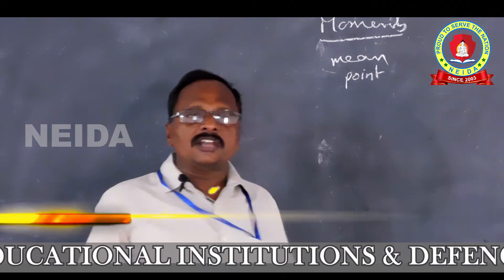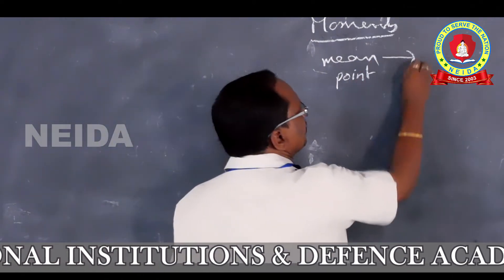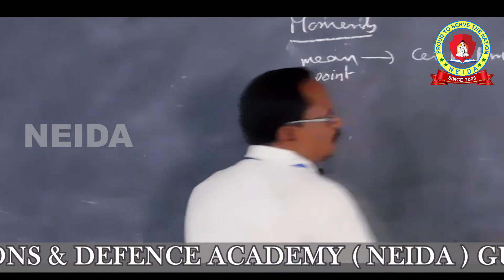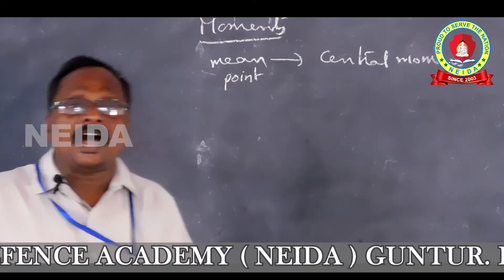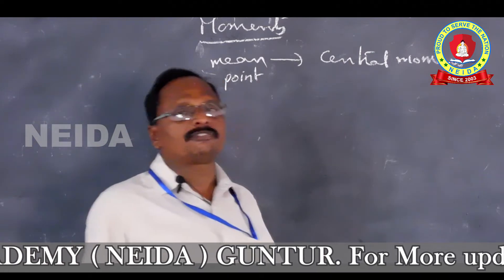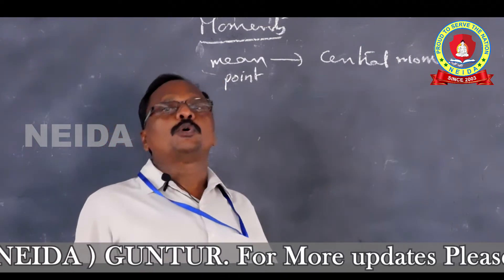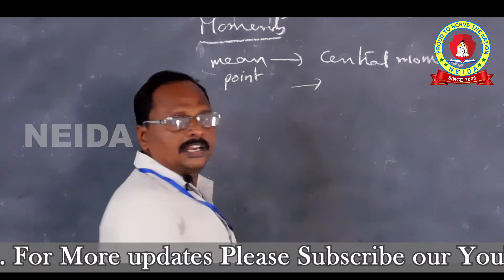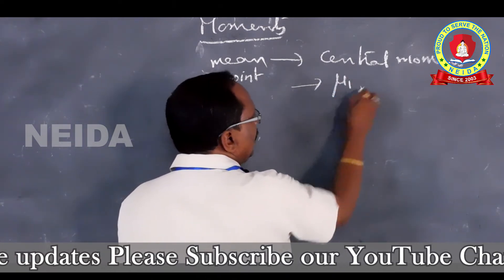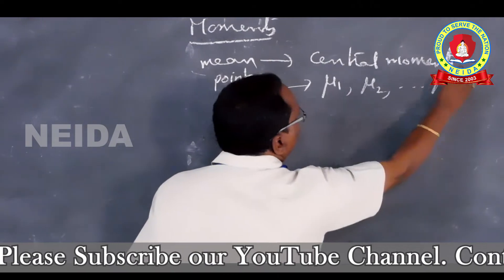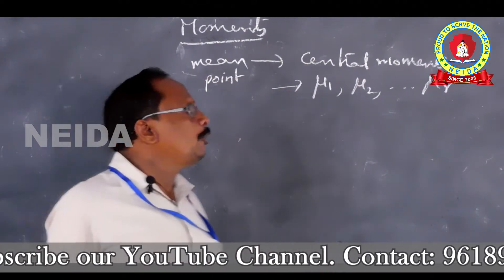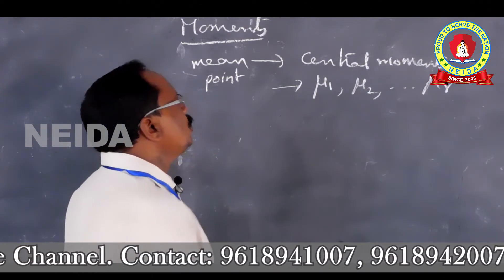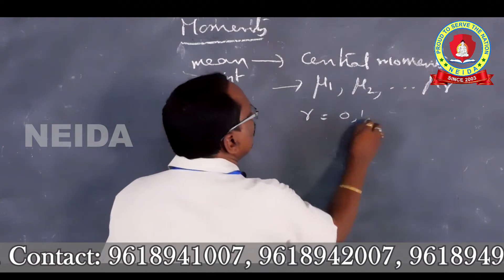The constants calculated from the mean are known as central moments, also called moments about mean. These are denoted by μ₁, μ₂, and so on up to μᵣ, meaning we have r constants calculated from the mean. Suppose we take r equal to 0, 1, 2, 3 — we get μ₀, μ₁, μ₂, μ₃, and so on.